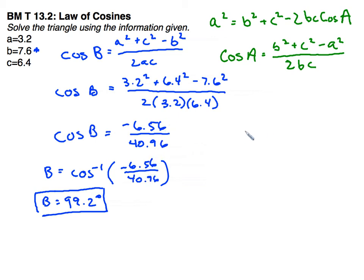This time I'm going to find angle a. So the cosine of angle a is going to be 7.6 squared plus 6.4 squared minus 3.2 squared over 2 times 7.6 times 6.4. And that's again the angle minus the side opposite up here.